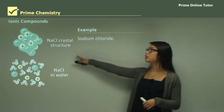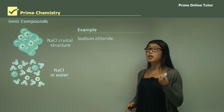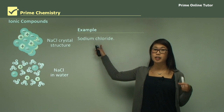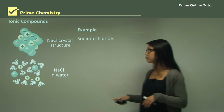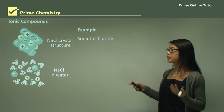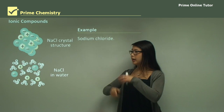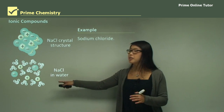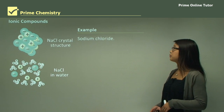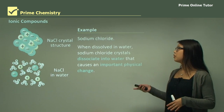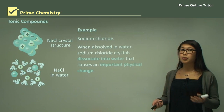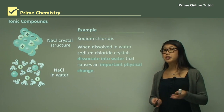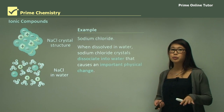Sodium chloride has a lattice crystal structure of positively charged sodium ions and negatively charged chloride ions. This can dissolve in water, where the crystal structure breaks up and becomes interspersed between the water molecules. When sodium chloride dissolves, the crystals dissociate into the water — this is an important physical change.